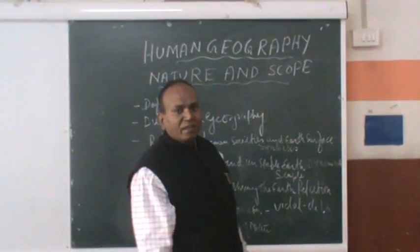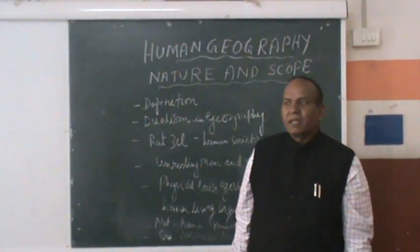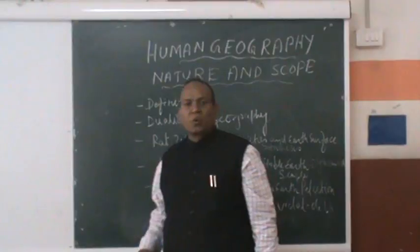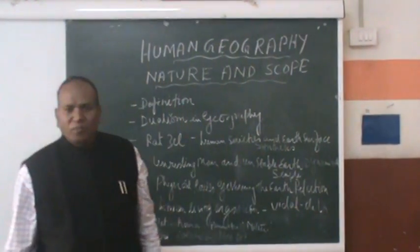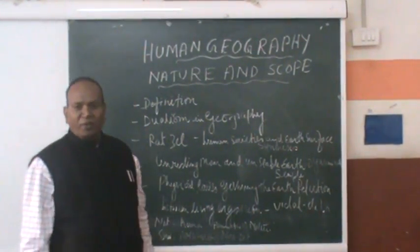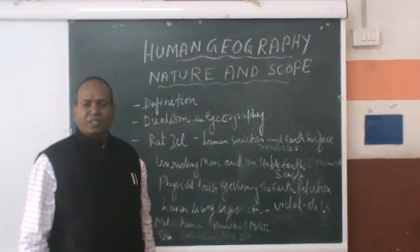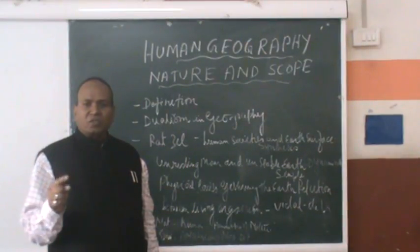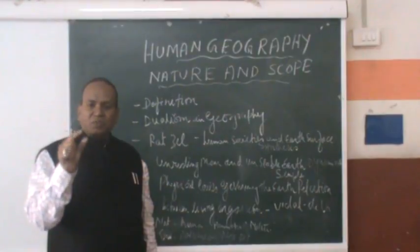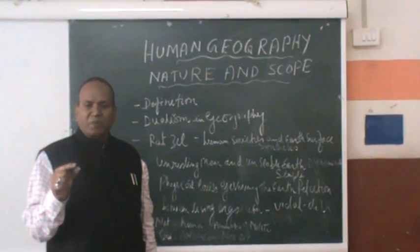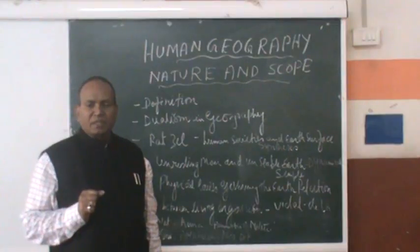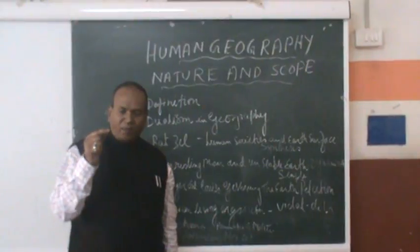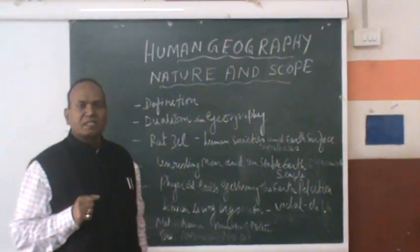Good morning students, today I am going to enrich you about the nature of human geography — its nature and scope. Now, when we talk about human geography, it relates to the relationship of human beings with the surface of the earth. It covers different aspects of human beings: their social, physical, and economic life of the people who inhabit the earth's surface. Before discussing the scope of human geography, let's come back to the basics.